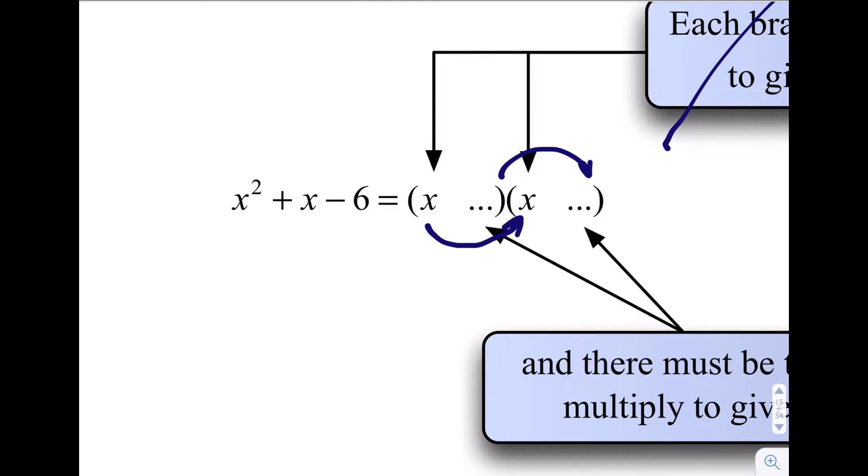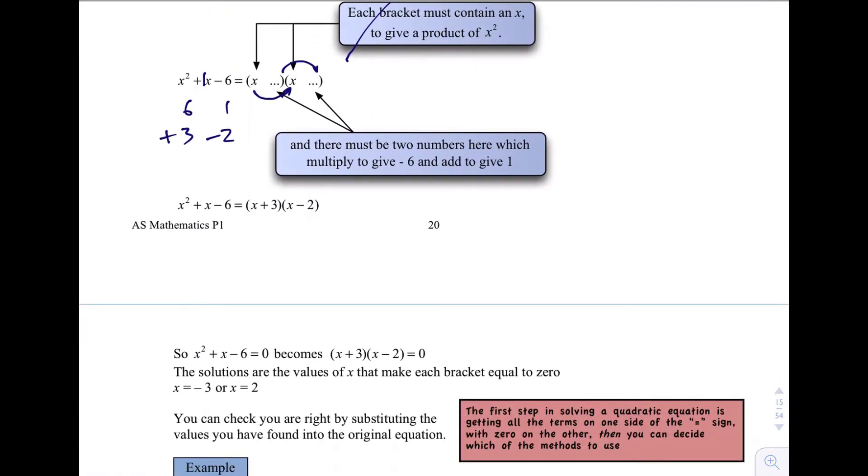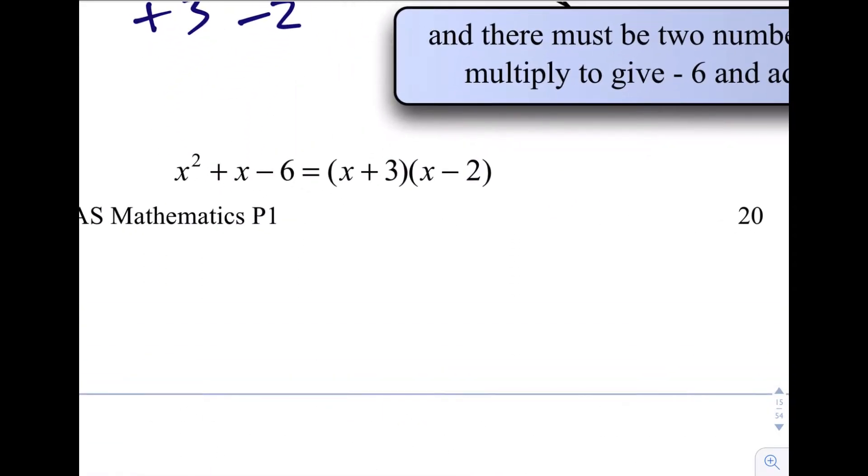But they also have to add to give me the number in front of the x there. So if I just kind of write down the pairs of numbers that multiply to give me six. Now I want two numbers here that add to give me one, so I reckon three and negative two. There we go, that is the answer to that, three and negative two, so that's what I put in there, plus three and negative two, and then we get an x squared minus two x plus three x is plus x, and three times negative two is negative six, so I've got it.